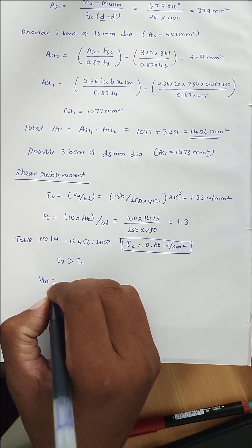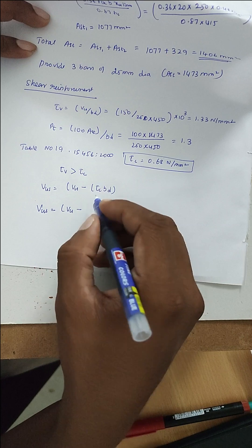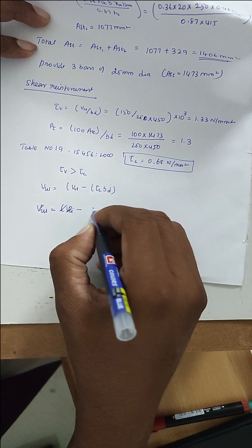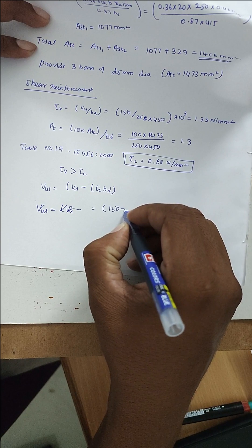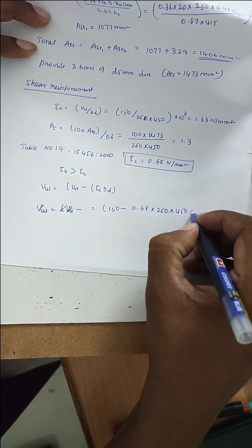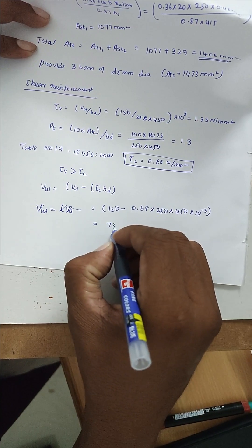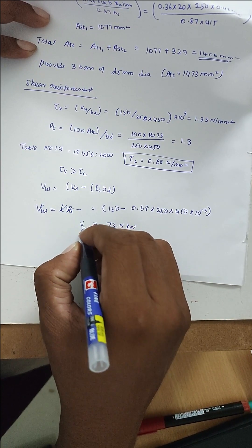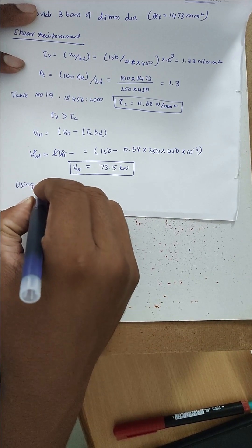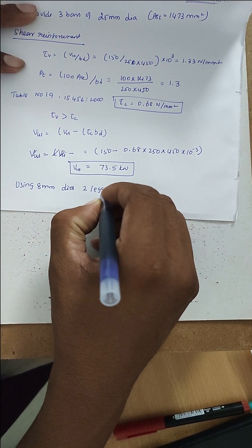VUS = VU − τc × b × d = 150 − 0.68 × 250 × 450 × 10⁻³ = 150 − 76.5 = 73.5 kN. Using 8 mm dia. two-legged stirrups for shear reinforcement design.